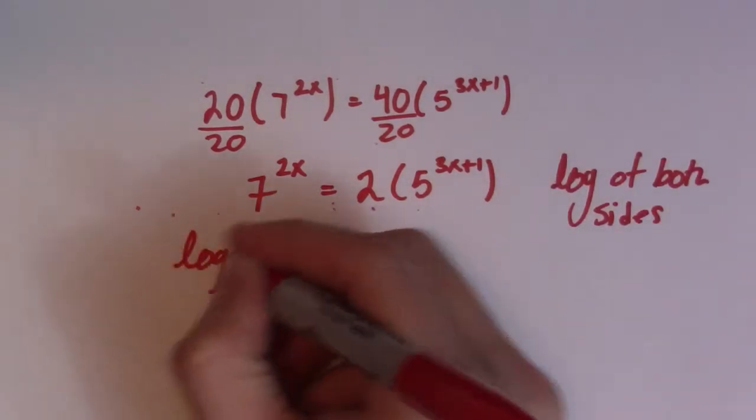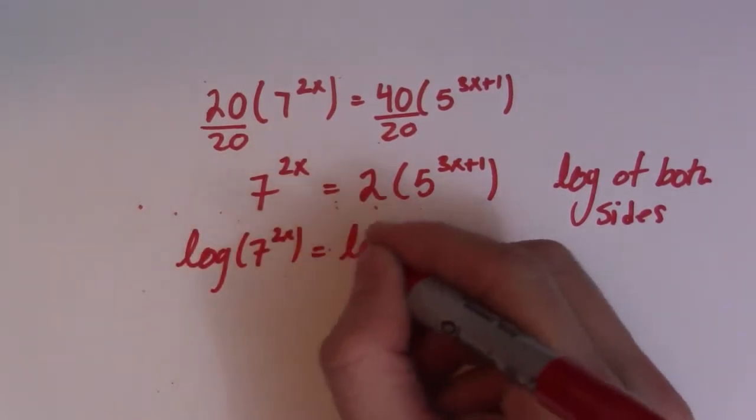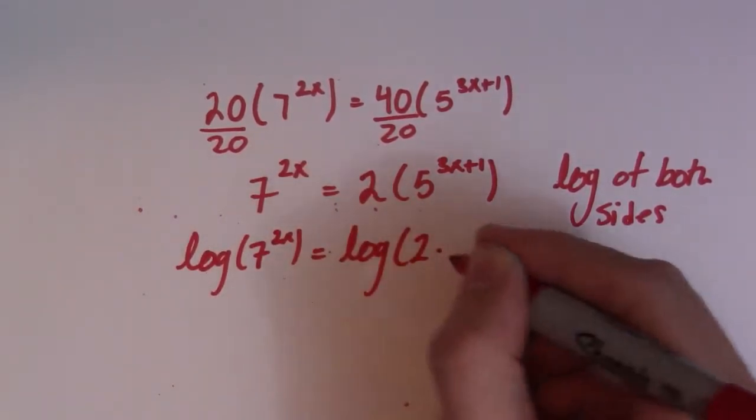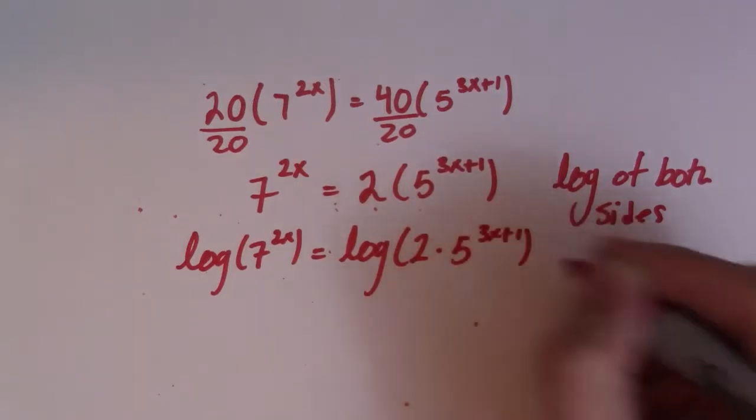So I take the log of this side, so I get log 7 to the 2x is equal to log 2 times 5, 3x plus 1, just like that.